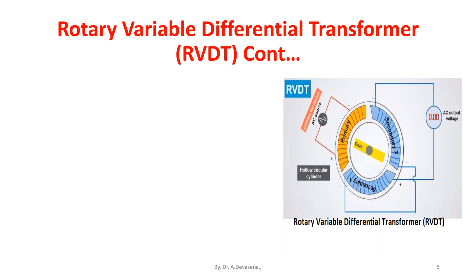As the shaft rotates and turns the core, the mutual inductance between primary and secondary windings varies and produces an output voltage versus rotation response.